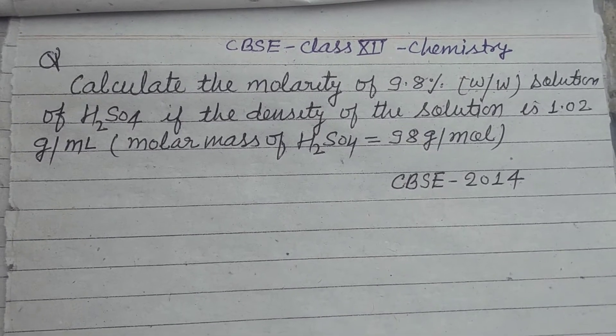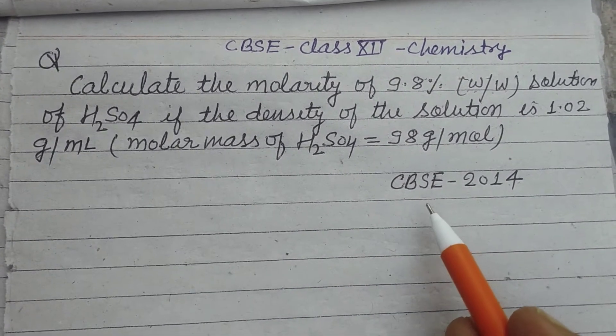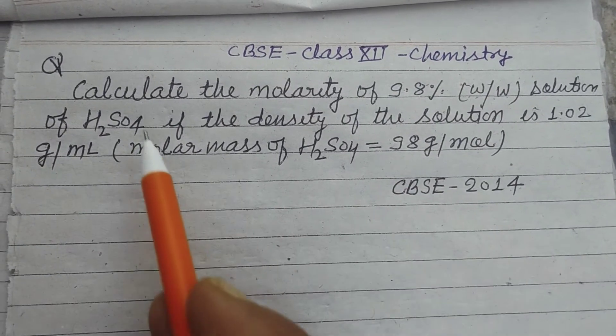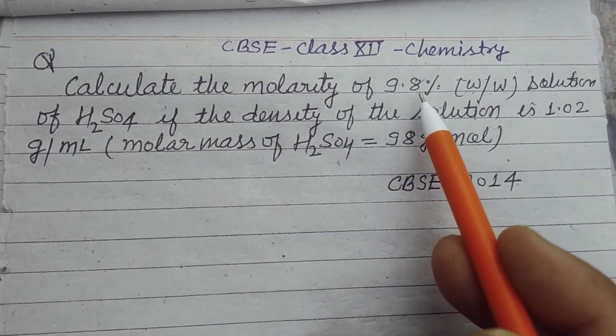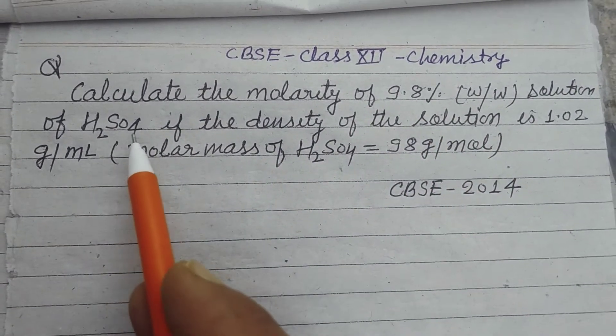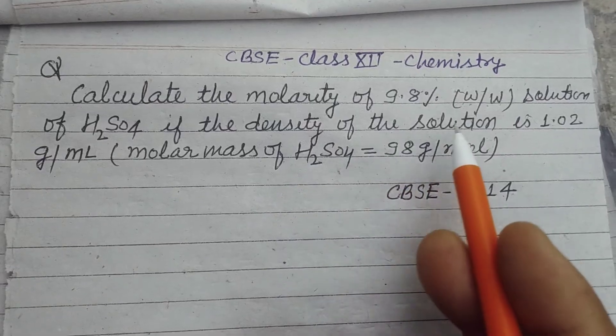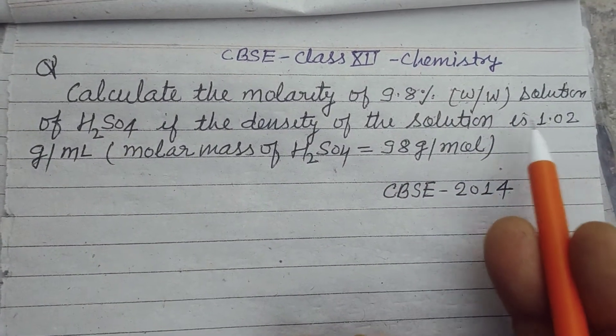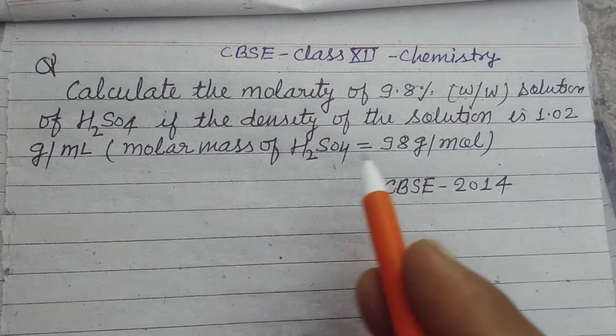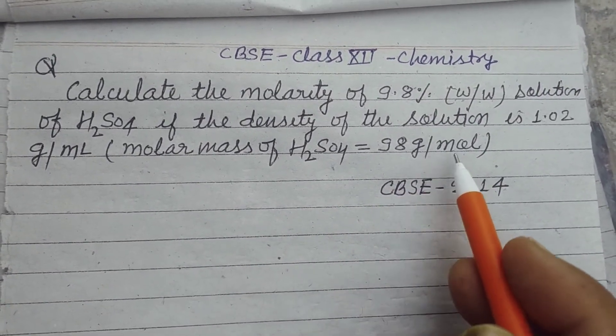Hello students, welcome to this YouTube channel. This question is from CBSE Class 12 2024 board exam. Calculate the molarity of 9.8% weight by weight solution of H2SO4 if the density of solution is 1.02 grams per milliliter. Molar mass of H2SO4 is given as 98 grams per mole.